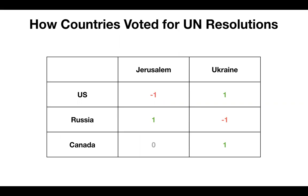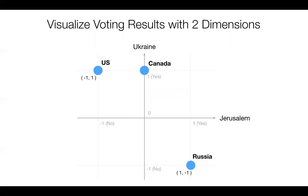Once we get this numeric representation, we can calculate the Euclidean distance or Manhattan distance. Let's visualize this so we can understand more intuitively what distance really means. This is a two-dimensional space because we have only two resolutions. Ukraine is the Y-axis and the Jerusalem resolution is the X-axis.